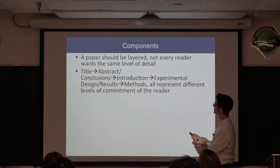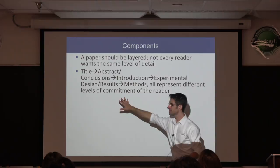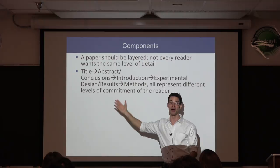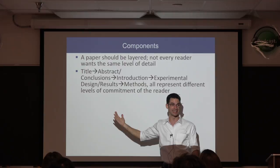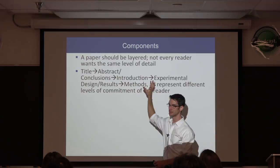The title, abstract, conclusions, introduction, experimental design, and results/methods all represent different levels of commitment on the part of the reader. Really reading a scientific paper takes about an hour. The specialists in the field will take that time, but it's important for others that you put what is expected in each of these sections.